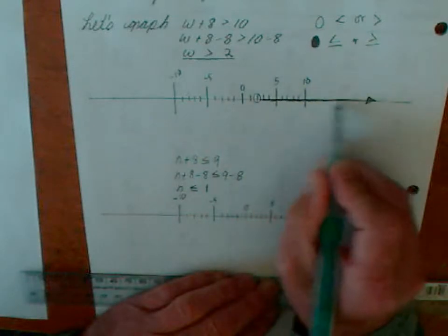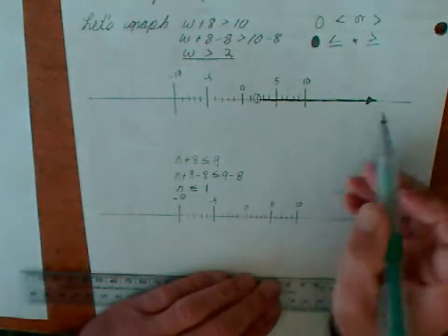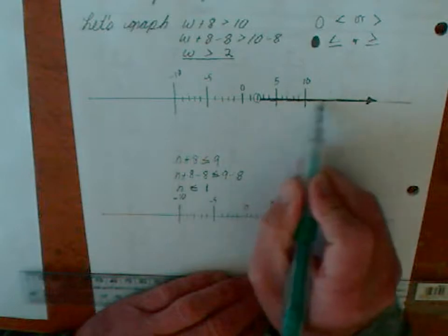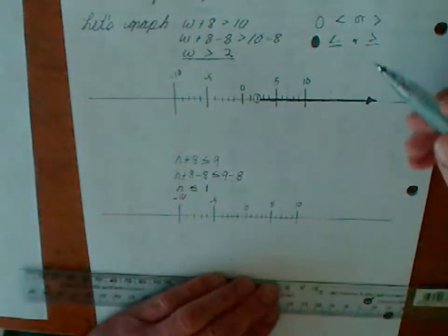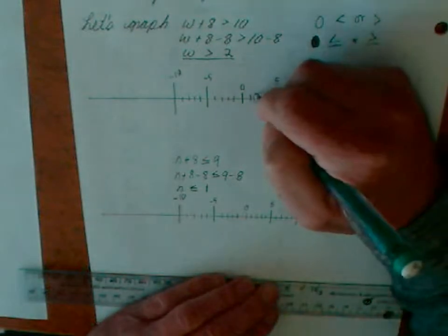3, 4, 5, 6, 7, all the way out. That's why we show an arrow at the end, because it goes on forever. Okay? So it doesn't have the equal to sign, so it's a simple open circle, just like this.